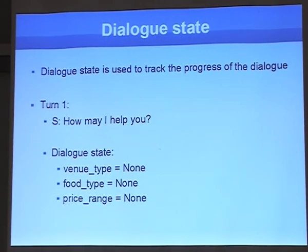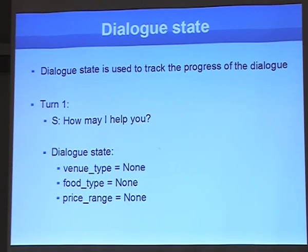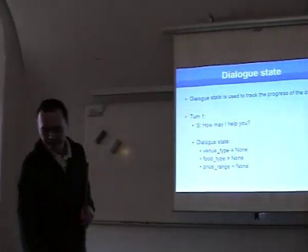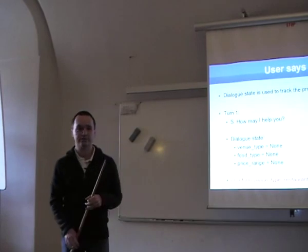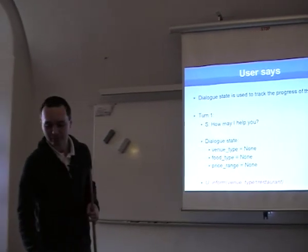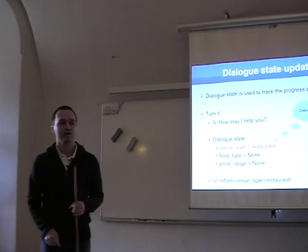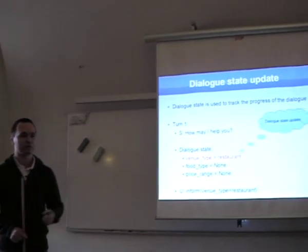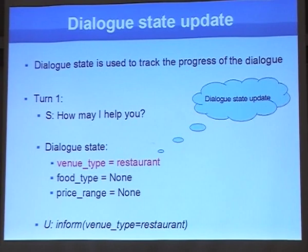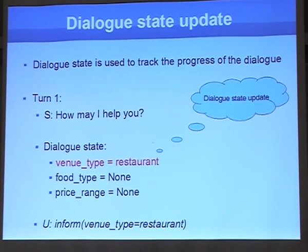The dialogue state is used to track the progress of a dialogue. It can be simply represented by a few variables. At the beginning they have no information. When the user says they are looking for a restaurant — denoted by a dialogue act — we update one particular variable in the dialogue state. We call this a dialogue state update: given incoming information and the last user act, we perform an update.